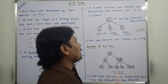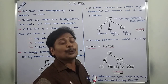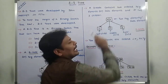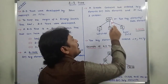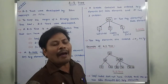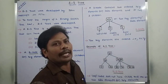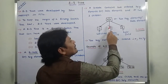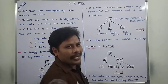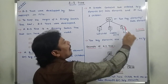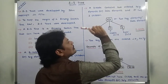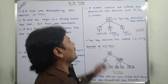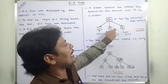Now for the three node. A three node contains two data elements or key elements, and those two elements are ordered. It has three children: a left child, a middle child, and a right child.